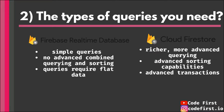The second question is: what types of queries do you need? Just as data is structured simply in the Realtime Database, its queries are also simple. Cloud Firestore has richer, more advanced querying. Because data in the Realtime Database is denormalized and flat, we use simple queries. Cloud Firestore supports combining different queries and conditions with advanced sorting capabilities and advanced transactions — something not really available in the Realtime Database. If your application is all about data analysis and querying, go with Firestore; if you just need some data stored, the Realtime Database works fine.